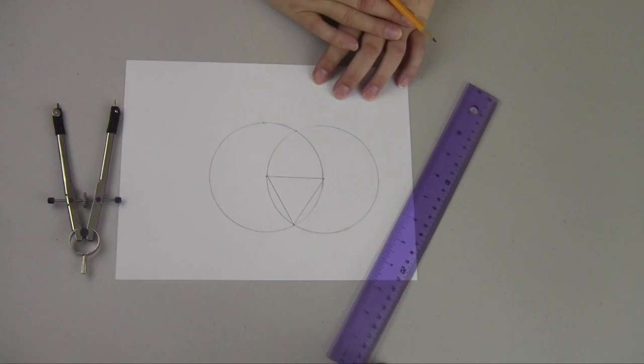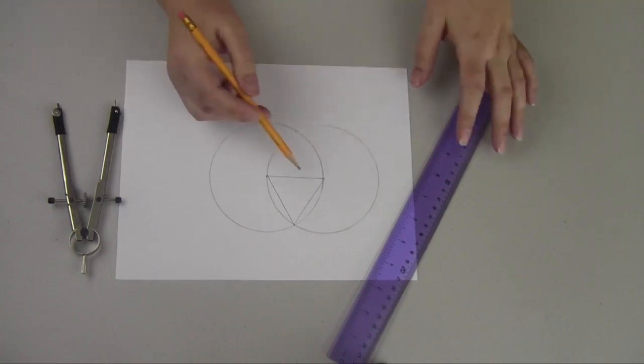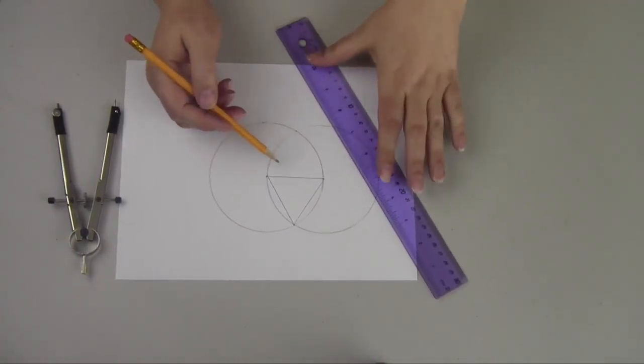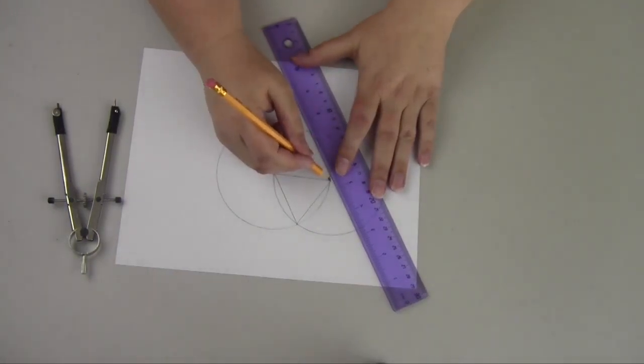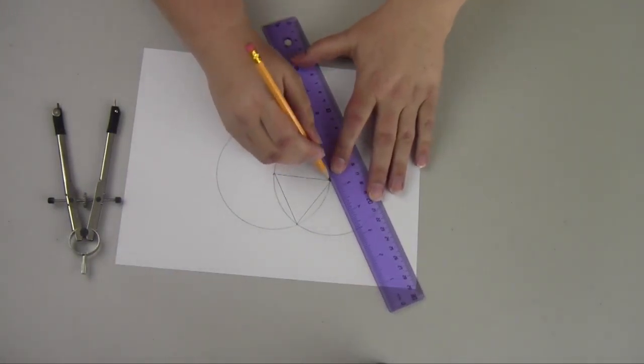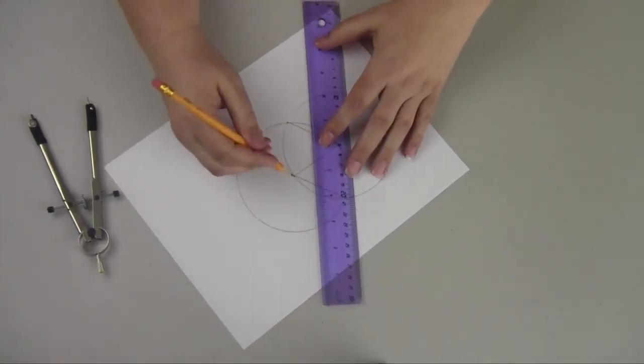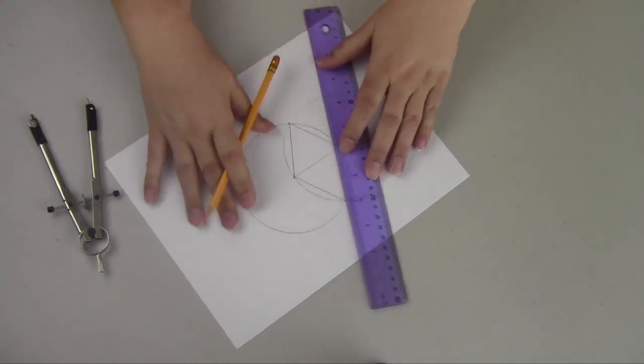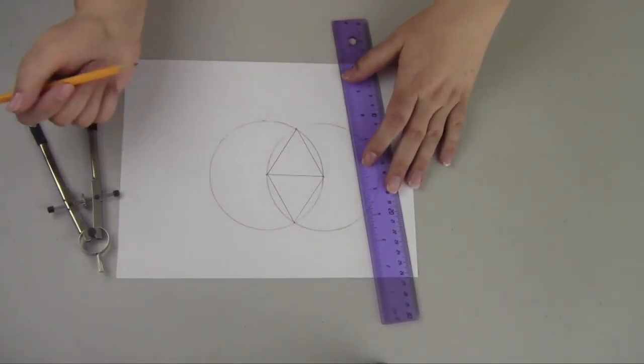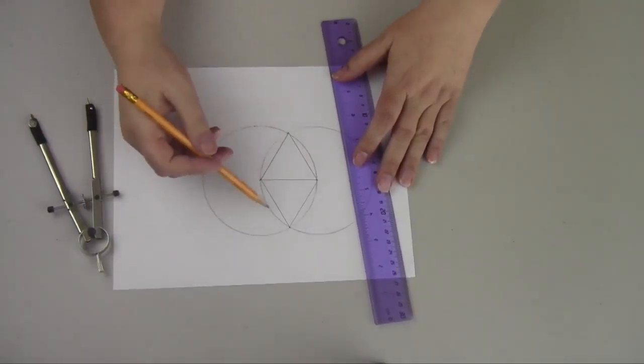So you start with the equilateral triangle, and I'm going to complete this next triangle by following the points all the way down from here. We're going to create two equilateral triangles within this almond shape—an upward pointing and a downward pointing equilateral triangle.